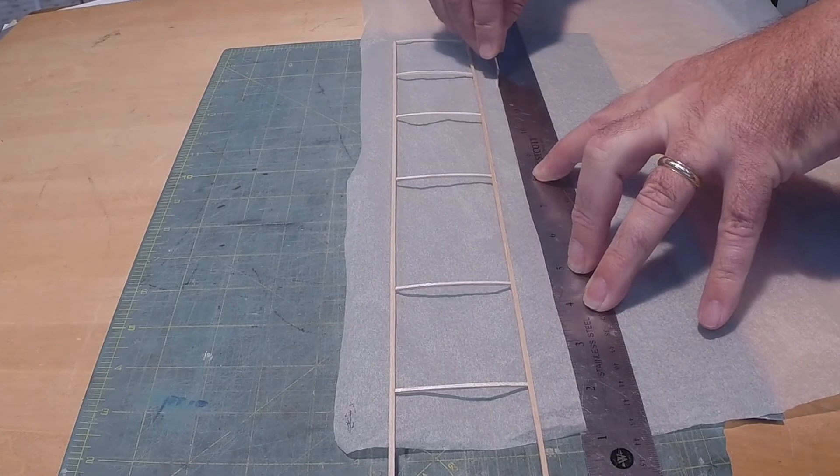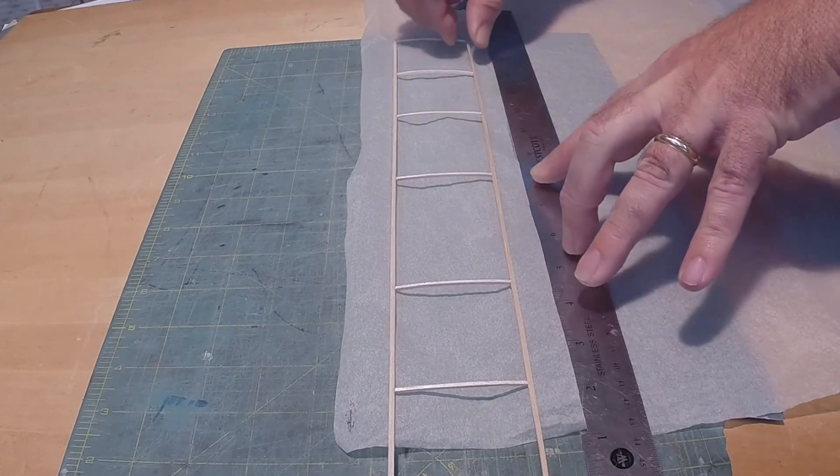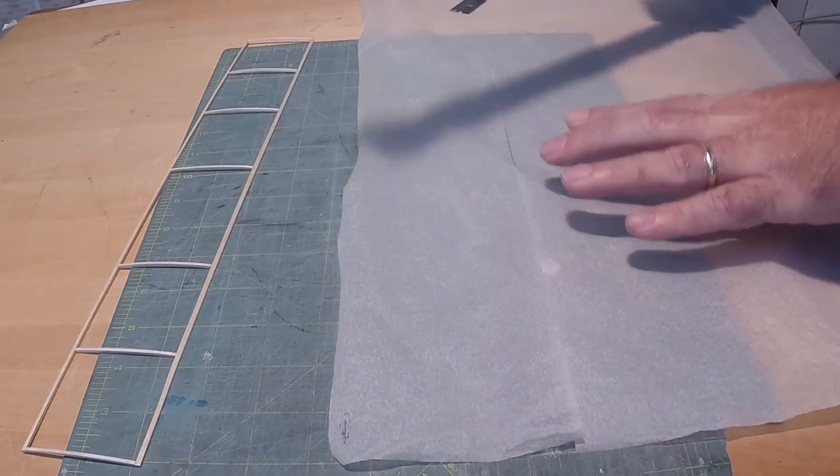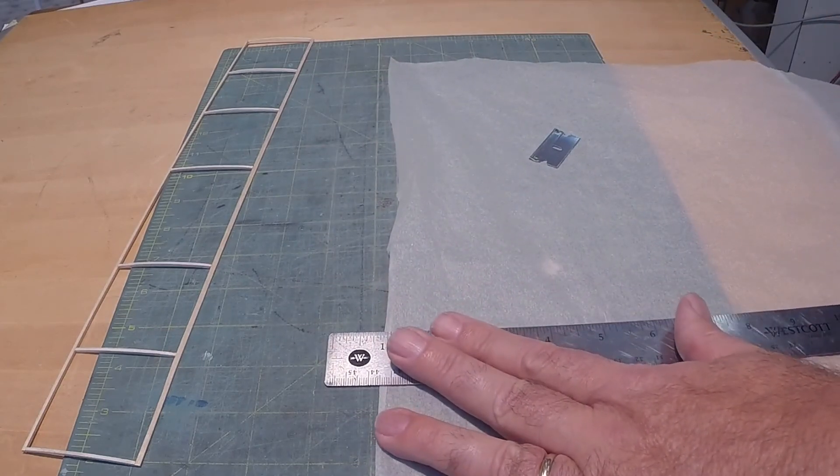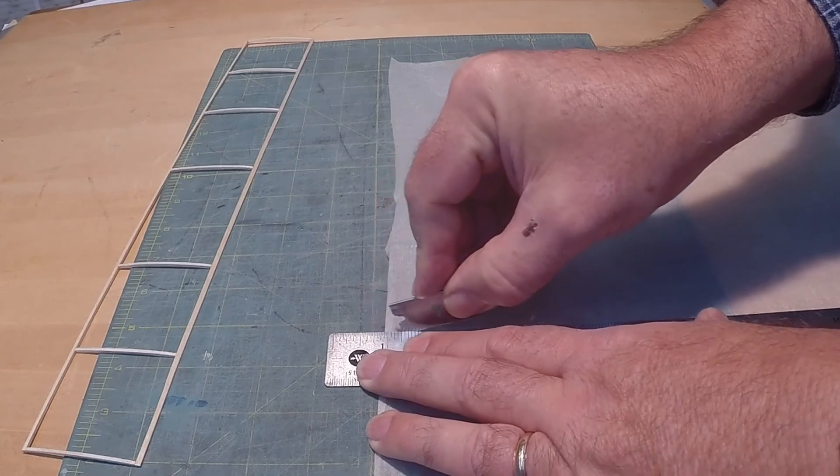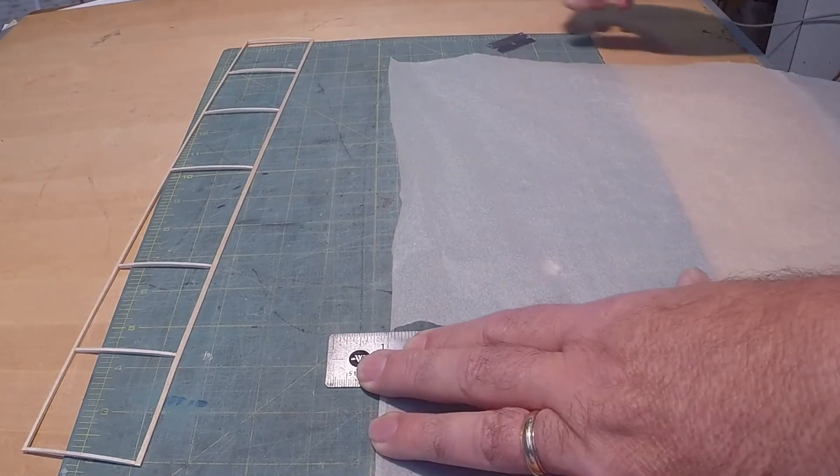Using a very sharp hobby knife, razor blade or scissors, cut a piece of tissue about one half inch oversize on each of the four sides of the main panel. Mark the direction of the grain on the tissue.